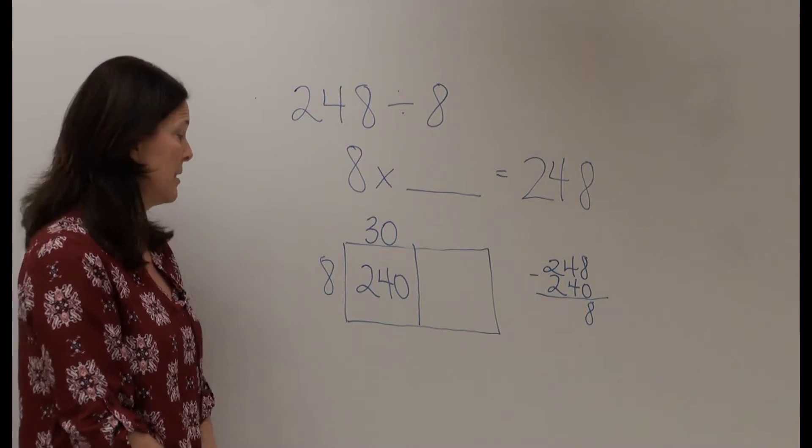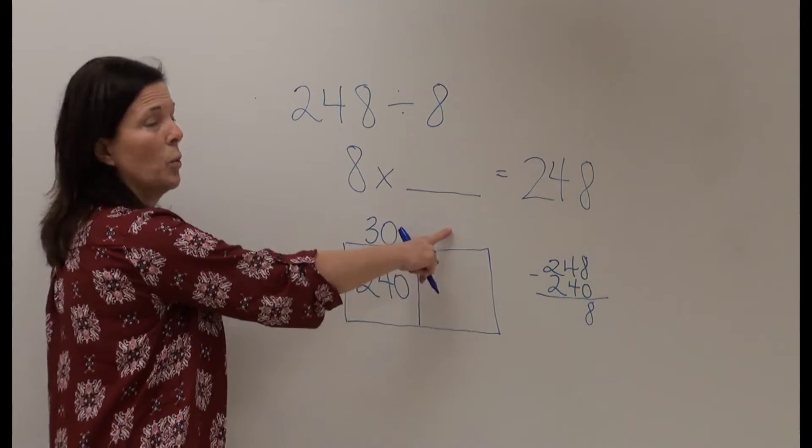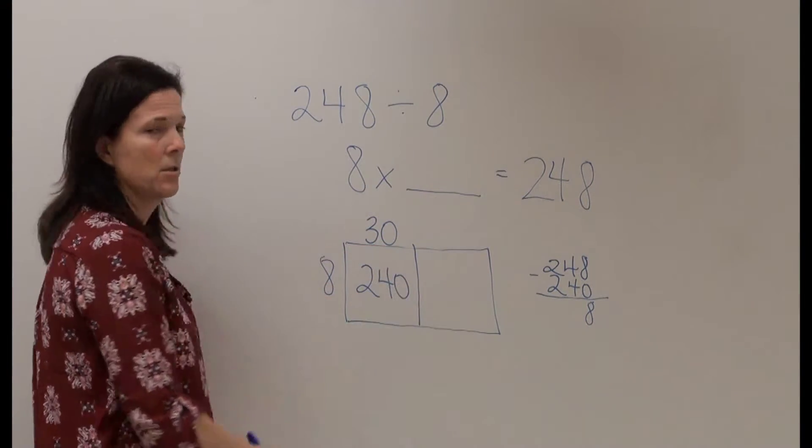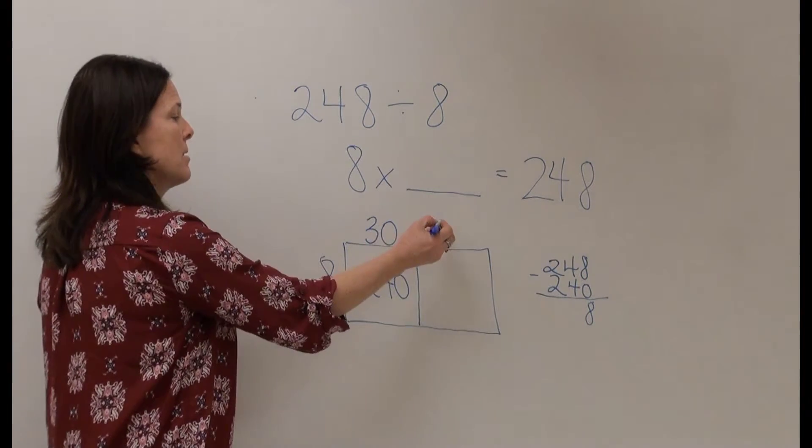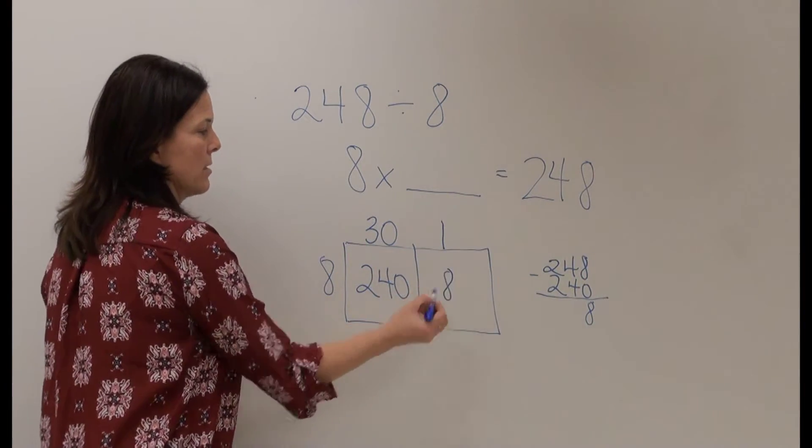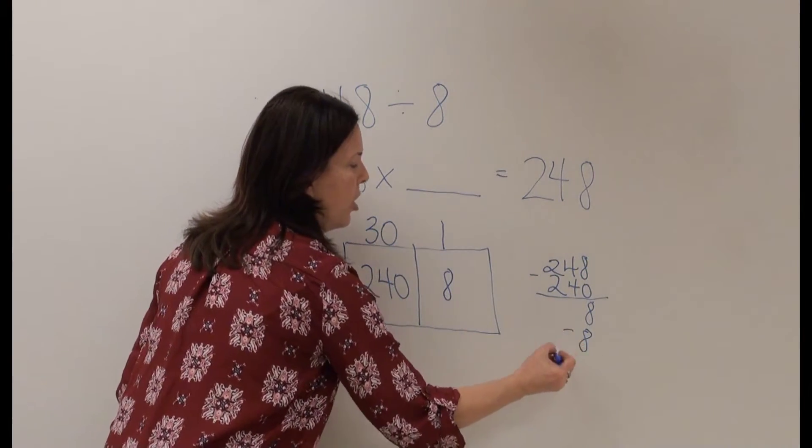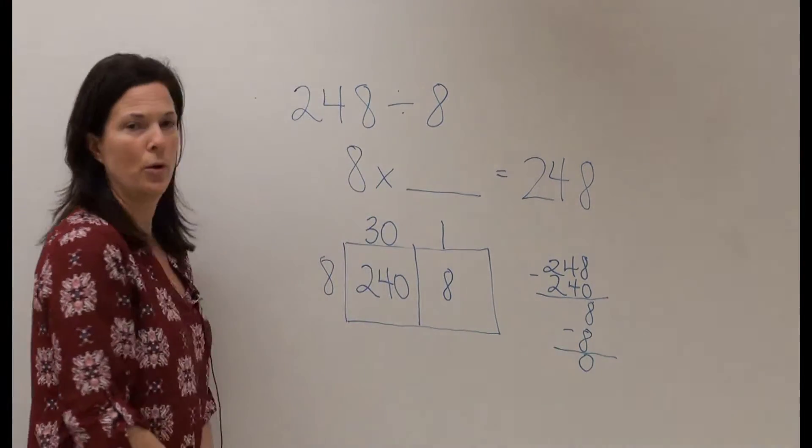So now I'm going to ask myself 8 times what factor will give me 8 and I know that 8 times 1 equals 8. So I have now placed all of my students in the rows.